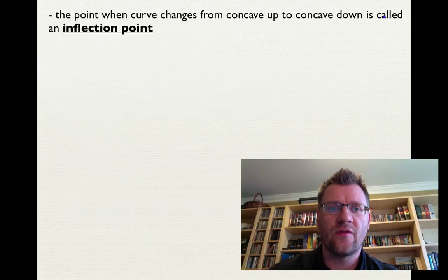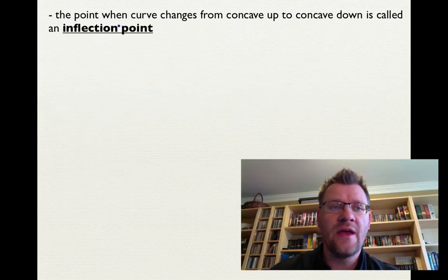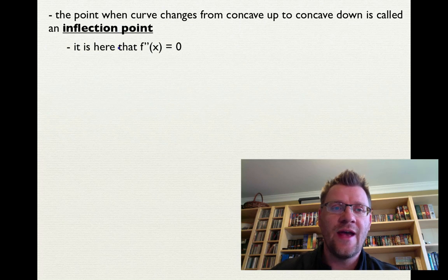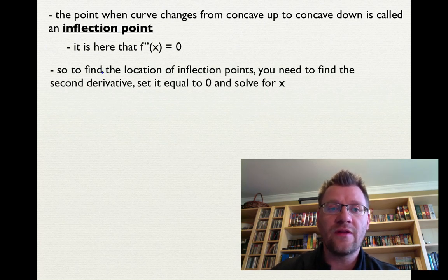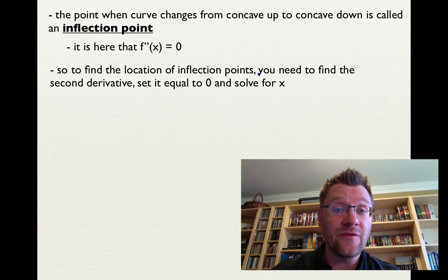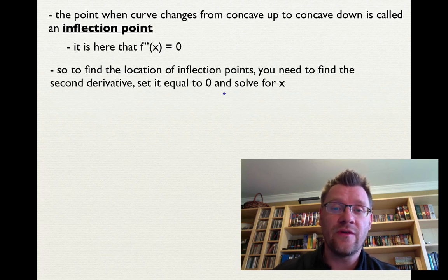The point where a curve changes from concave up to concave down is called an inflection point, and it is here that f double prime x equals zero. To find the location of inflection points, you need to find the second derivative, set it equal to zero, and solve for x.